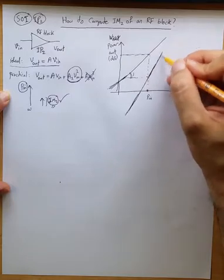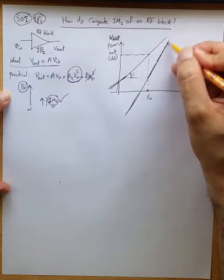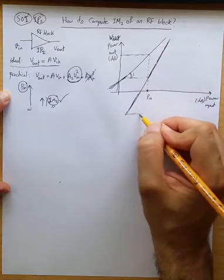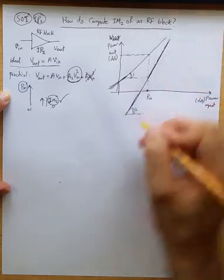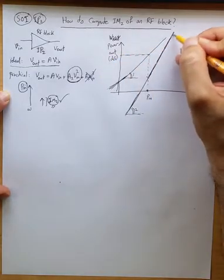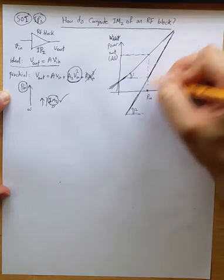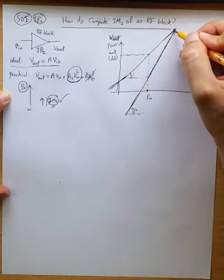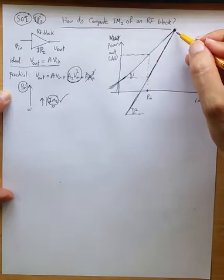As the power is increasing hypothetically there is a point so let's say tangent 2 between 20 log of P_in and 20 log of P_out. There is a point that these two components the first order and the second order components are going to intercept and that's why it's referred to second order intercept point.